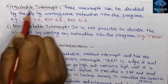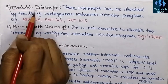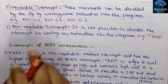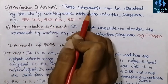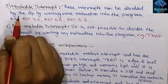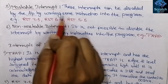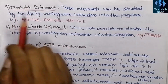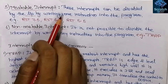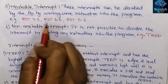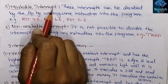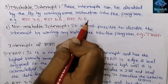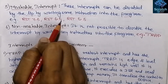Now, what is masking? Masking is the method of preventing the interrupt from disturbing the main program. Maskable interrupts are those which can be disabled by the microprocessor by writing some instruction into the program. When an interrupt is masked, the processor will not accept the interrupt signal. There are three types of maskable interrupts: RST 7.5, RST 6.5, and RST 5.5.